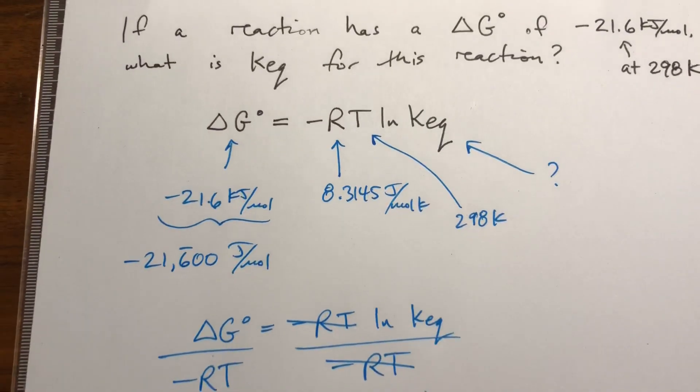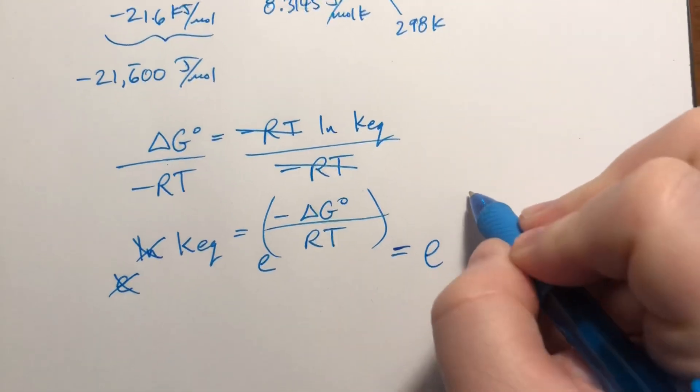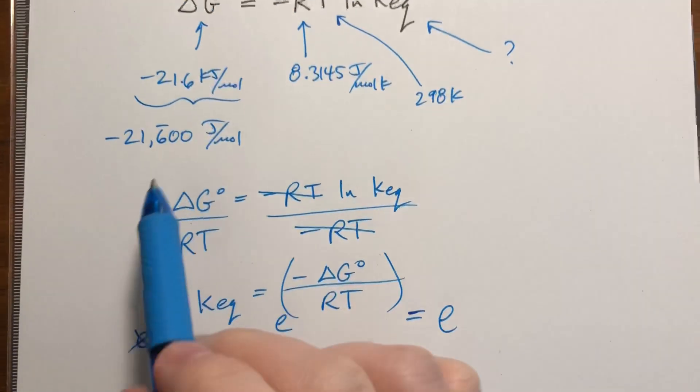Well, we have all those numbers, so we're going to plug them in. E is a button on your calculator, delta G is negative 21,600, but it's negative that,